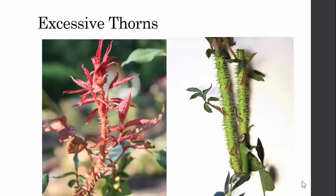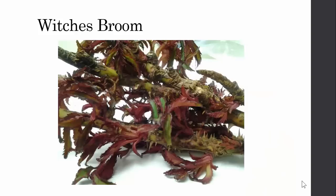Excessive number of thorns is a pretty good indicator of rose rosette disease. Excessive thorns are not normal growth for roses of pretty much any kind, so that is an indication.